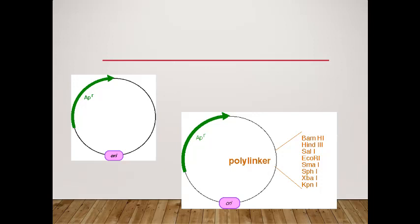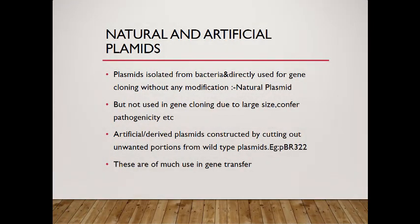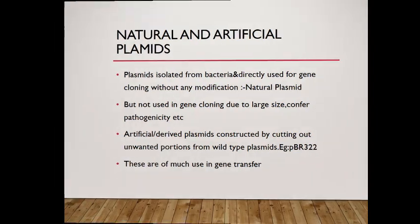These are some of the polylinker sites for restriction endonucleases and origin of replication shown in this diagram. What is the basic difference between natural and artificial plasmids? Plasmids that are isolated from bacteria directly and used for gene cloning are called natural plasmids. But we do not use them for gene cloning due to their large size and pathogenesis. The artificial or derived plasmids that we have constructed by cutting out unwanted portions from wild-type bacteria are called artificial plasmids. We can take pBR322 as an example.